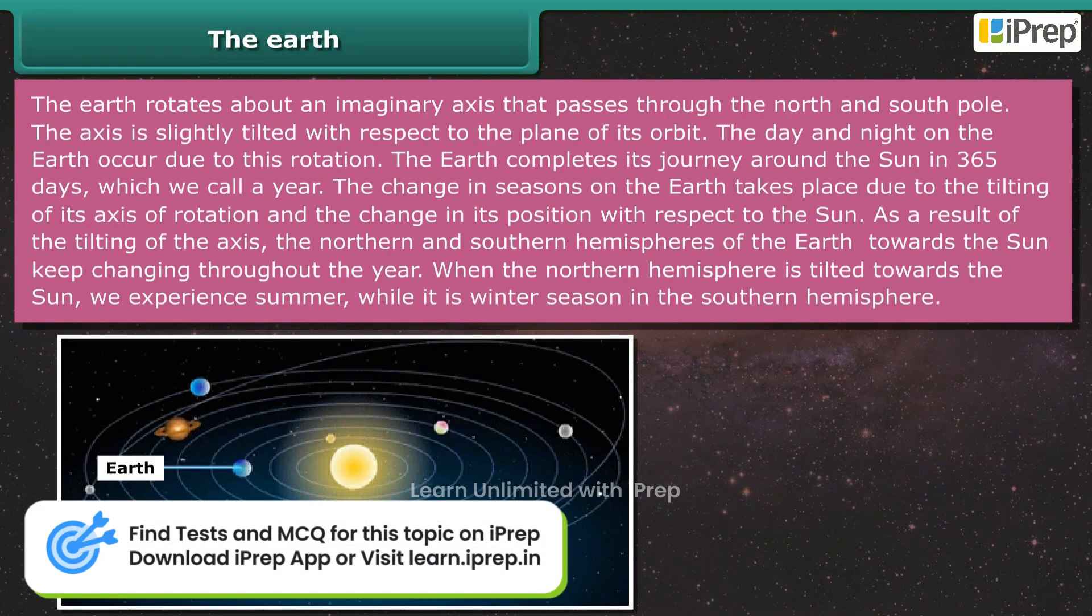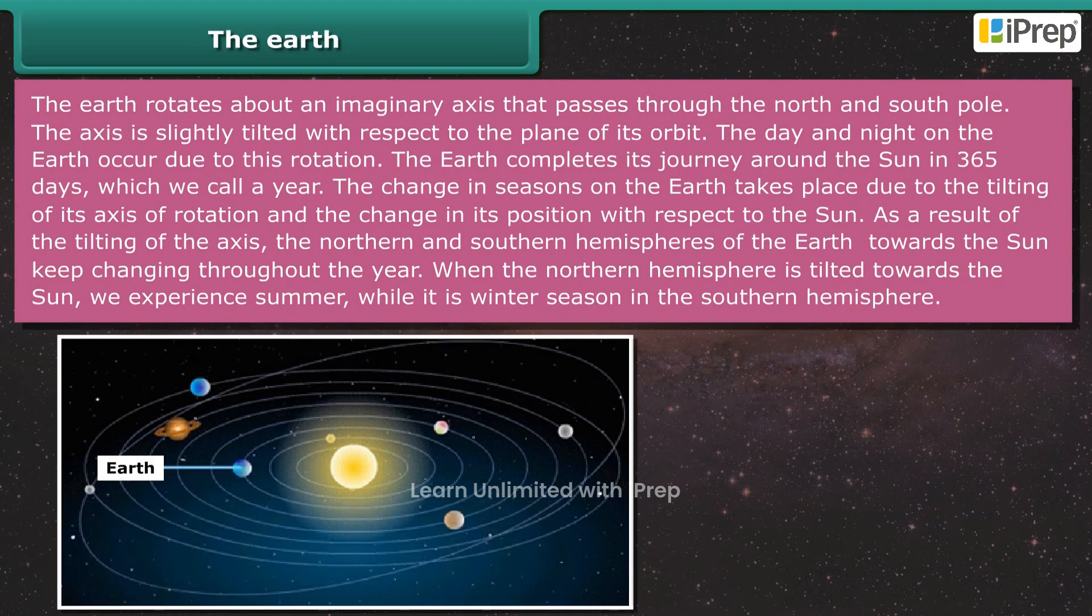The Earth rotates about an imaginary axis that passes through the north and south pole. The axis is slightly tilted with respect to the plane of its orbit. The day and night on the Earth occur due to this rotation.